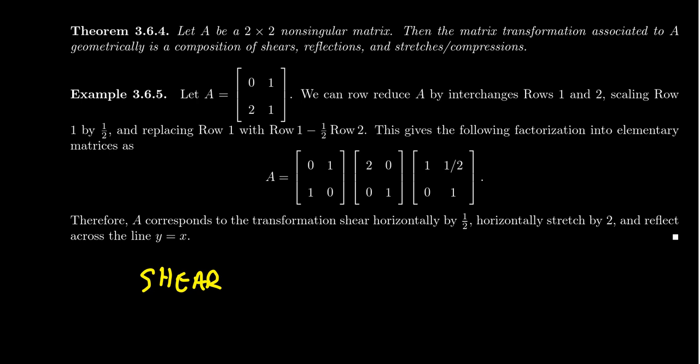Be aware that shearing maps actually coincided with the replacement elementary matrices that we'd seen before. Then we saw that if you were to have a reflection, we could get reflections, which if you reflect across the line y equals x,